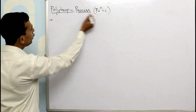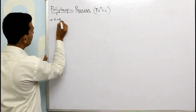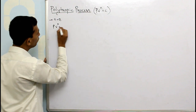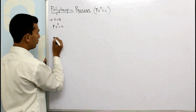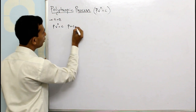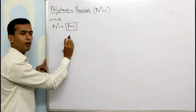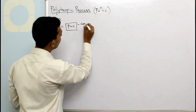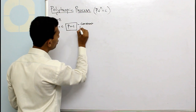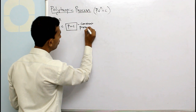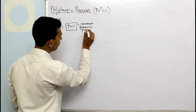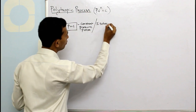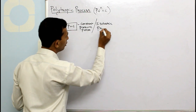Suppose in this equation we put n equals to 0. This equation becomes PV raised to 0 equals to C. Anything raised to 0 equals 1, so it becomes P equals to constant. This is nothing but the equation for a constant pressure process, also called as the isobaric process.